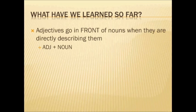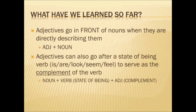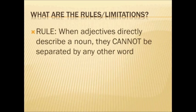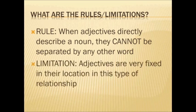When adjectives are directly describing nouns, they go in front of them. But we've just learned that adjectives can also go after a state of being verb — words such as is, are, look, seem, feel — and they can serve as the complement of that state of being verb. As with any relationship, there must be some limitations when it comes to fitting these pieces together. When adjectives directly describe a noun, they cannot be separated by any other word. Adjectives are very fixed in their location in this type of relationship.